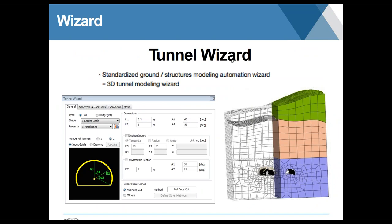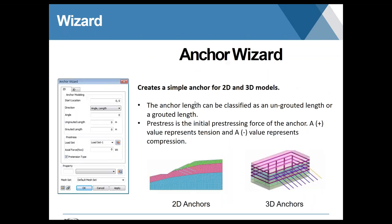Some other unique features include the tunnel wizard, which uses four tabs to create a whole 3D model—defining the method cut, excavation stages, and mesh in a single window, saving a lot of time. Similarly, for support elements like anchors, you can easily create them for 2D or 3D, specify the direction, how much is grouted or ungrouted, and if they need to be pre-stressed.